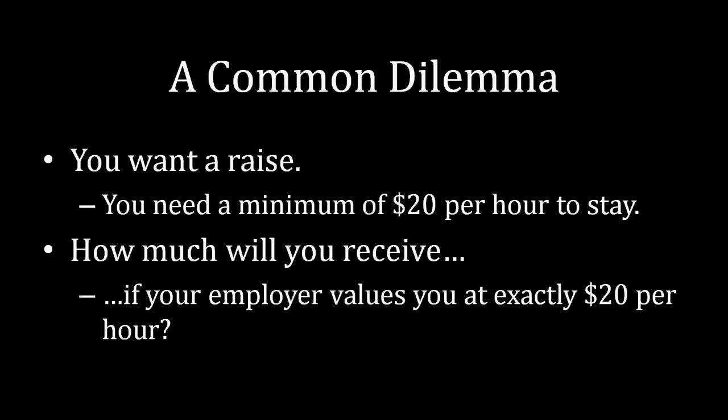The second case is the rare instance where your employer values you at exactly $20 per hour. Here, we can make a very precise prediction without having to think too much further. If you need at least $20 per hour to stay, and your employer is only willing to pay you up to $20 per hour, then there's exactly one value that is mutually satisfactory, and that is for the employer to pay you exactly $20 per hour.